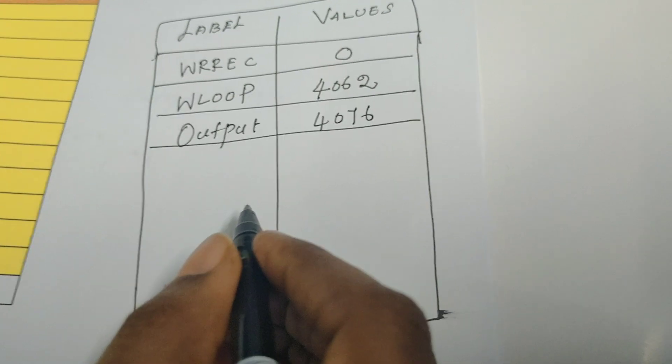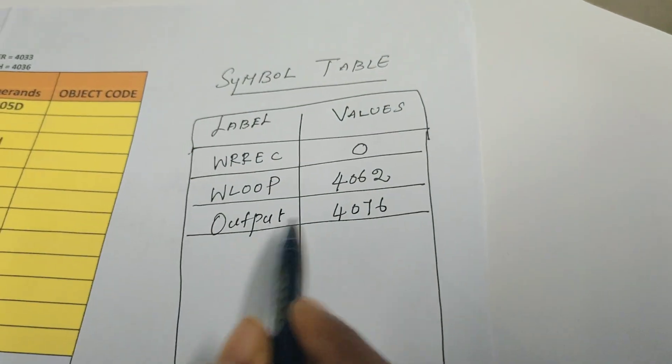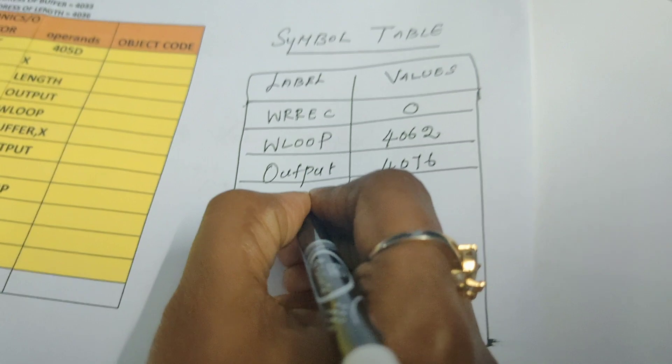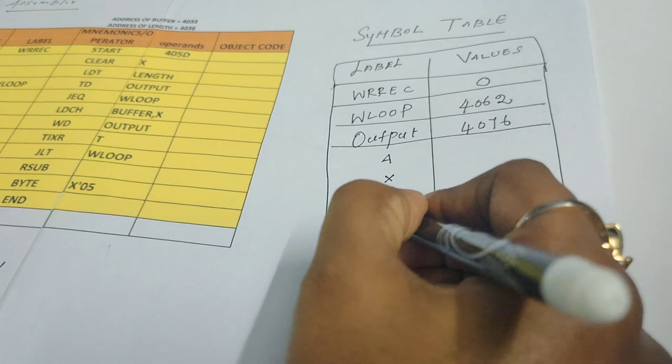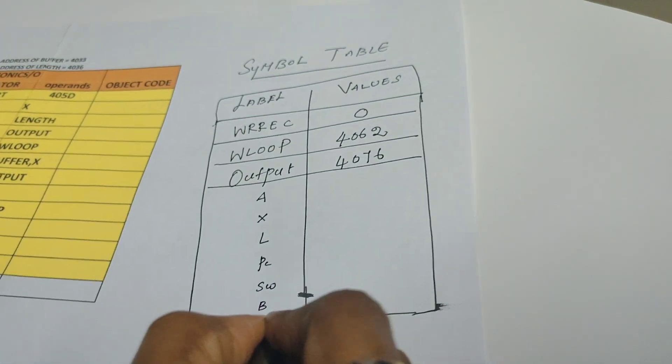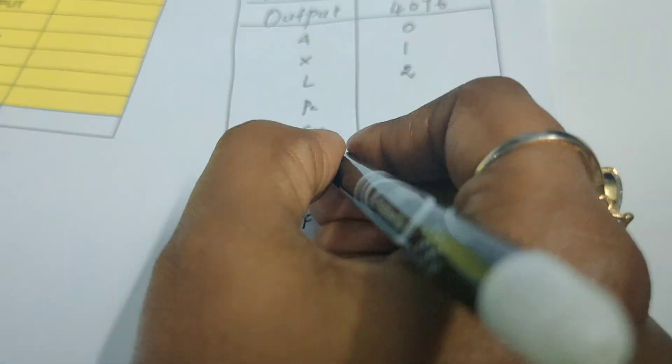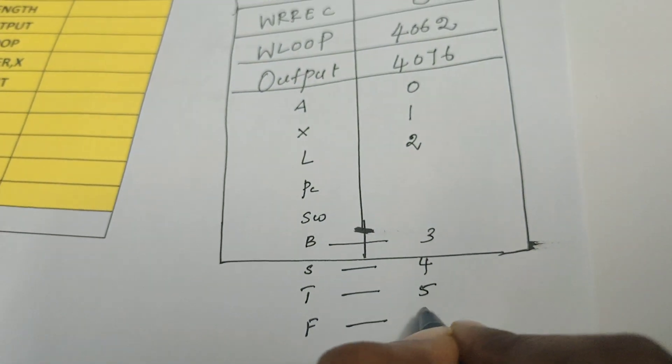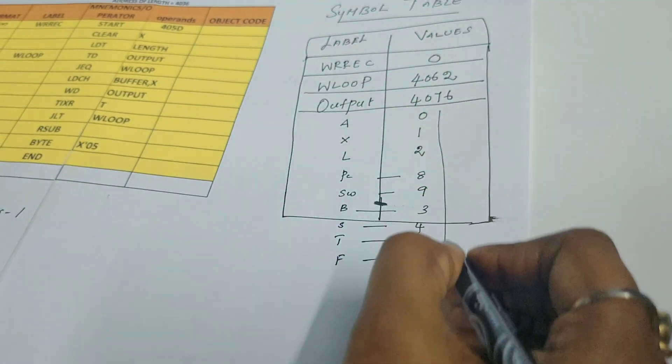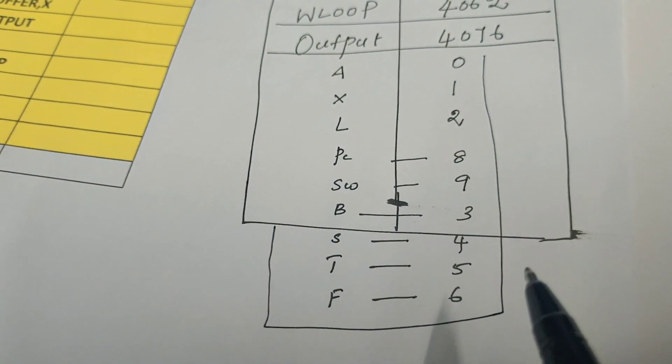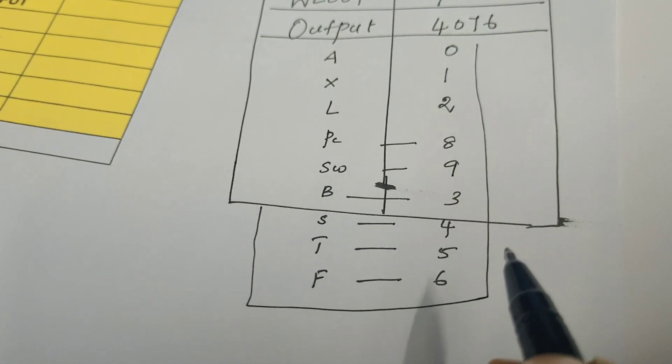This is the symbol table. Apart from the label and the values, the symbol table carries the information of the registers supported. We have the registers A, X, L, B, S, T, F, PC, and SW. In the corresponding addresses, for A it is 0, X it is 1, L it is 2, for B it is 3, S it is 4, T is 5, F is 6, for PC it is 8, for SW it is 9. These registers and their corresponding mnemonic addresses, these information are also available in the symbol table.